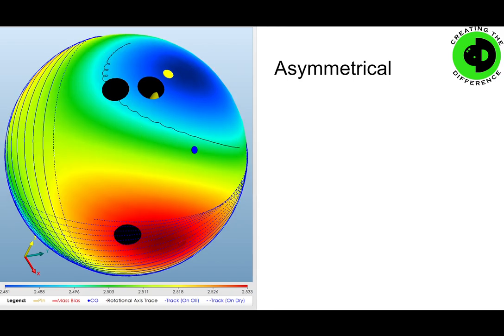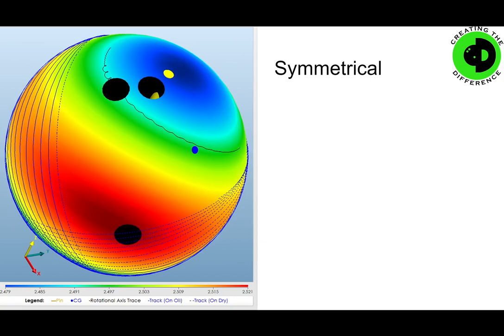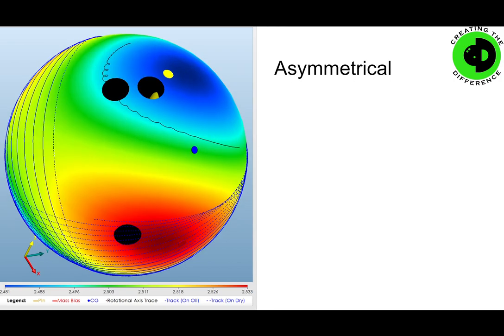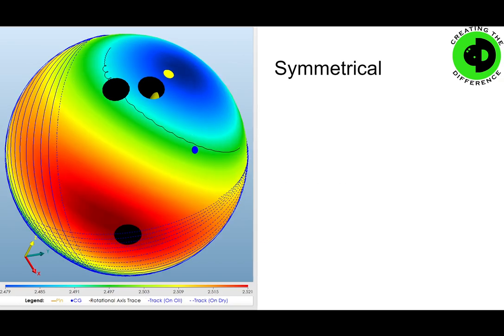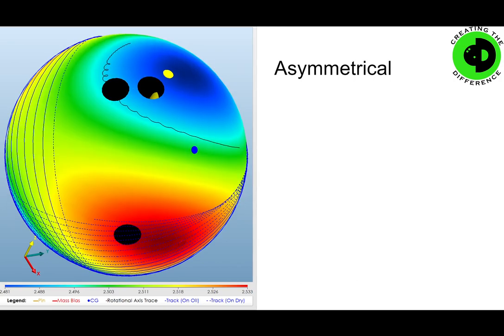It doesn't mean they won't ever use an asymmetrical ball — there are situations where you need your ball to hook earlier, especially on higher volumes, longer patterns, or patterns with a lot of oil down lane. You may want the asymmetrical ball because you need all the earlier hook you can get. But for the most part at super high rev rates, those guys like symmetrical balls because they're easier to control and the energy consumption is more controlled over a longer period of time. For a middle rev rate player, the asymmetrical ball might work better on the fresh, but as the lanes break down and you move left, you go to the symmetrical ball because it gives you more motion down lane since it's not consuming on the front side.